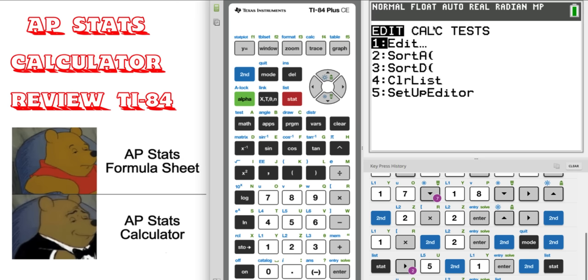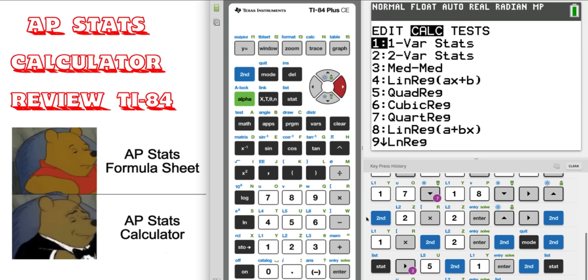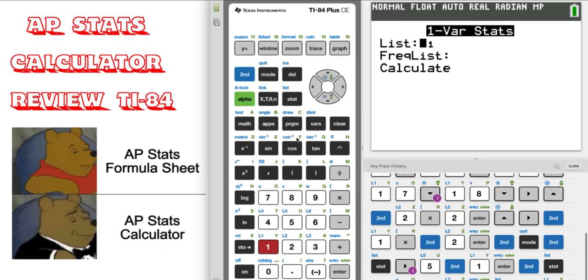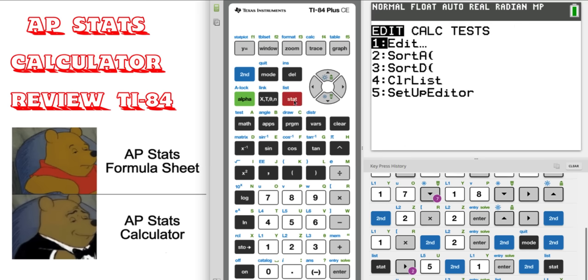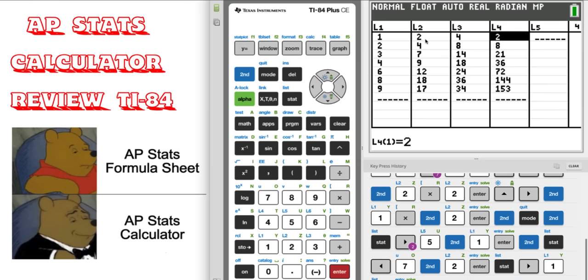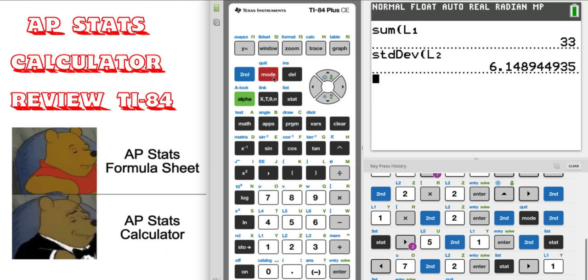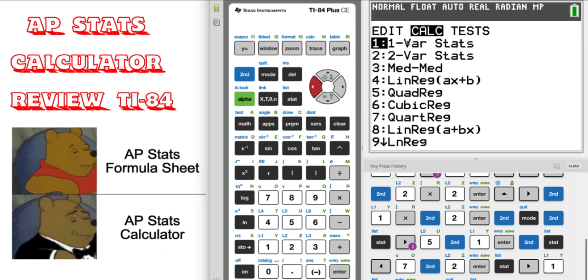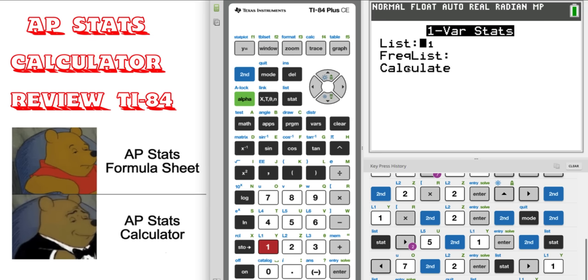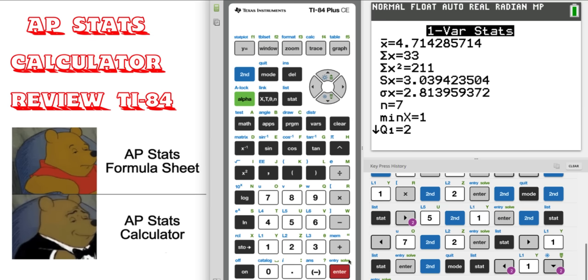But don't forget about under stat, you can go to calculate. We have also one variable statistics that does pretty much everything. So you can tell it which list to use in the frequency list. That's if you have two columns and maybe the second column tells you how many of the first column you have. So maybe you have like 21 ones. Let's look at what we have in here. So maybe we have two ones and four twos, right? So if that's the case, then you can use the frequency list. But if not, let's just go back where we were. One variable stats will tell you so much information about your data. You can just leave the frequency list blank if you want.